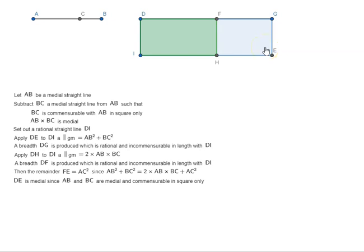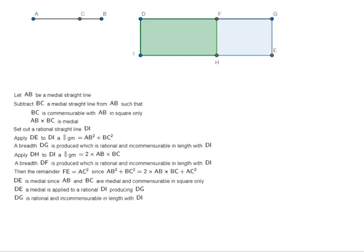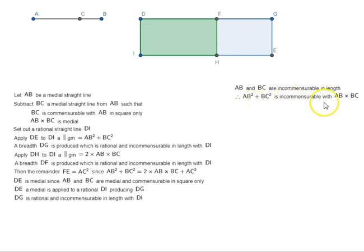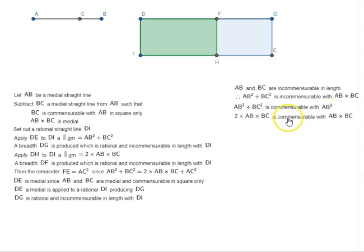BE is medial since AB and BC are medial and commensurable in square only. BE, a medial area, is applied to rational DI, producing DG, which is rational and incommensurable in length with DI. AB and BC are incommensurable in length because they are commensurable in square only. Therefore AB² + BC² is incommensurable with AB·BC, since AB and BC are commensurable in square but incommensurable in length. AB² + BC² is commensurable with AB², and 2·(AB·BC) is commensurable with AB·BC, so AB² is incommensurable with 2·(AB·BC), which implies DE is incommensurable with DH.